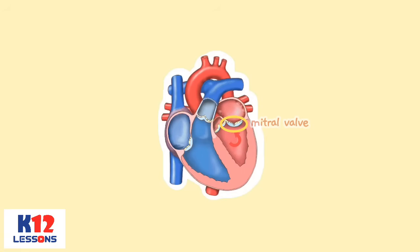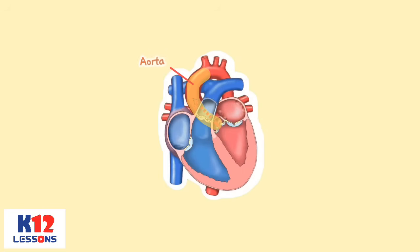This prevents blood from flowing backward into the atrium while the ventricle contracts. As the ventricle contracts, oxygen-rich blood leaves the heart through the aortic valve, into the aorta, to the arteries, and eventually into the veins to complete the blood circulation in the body.